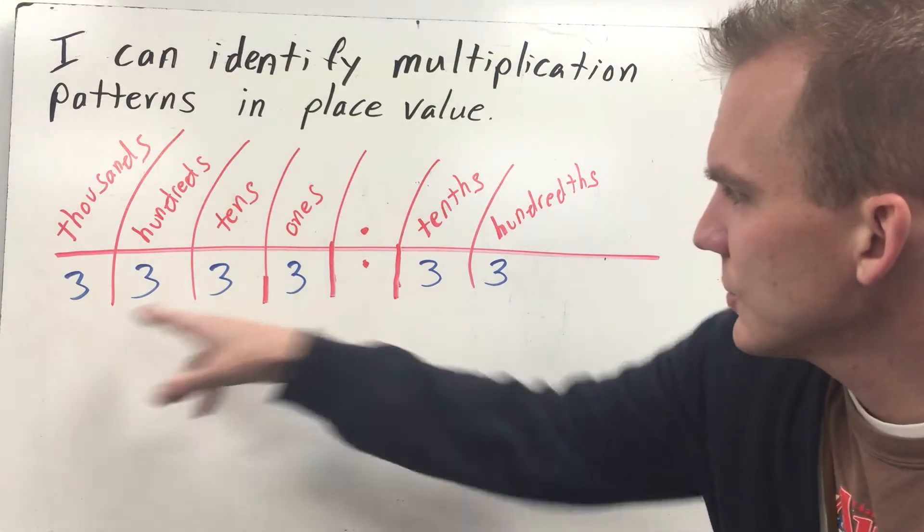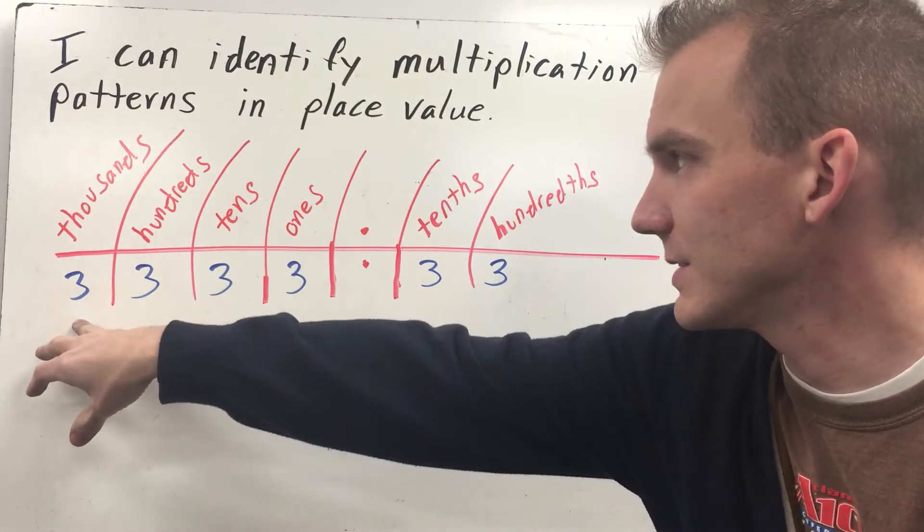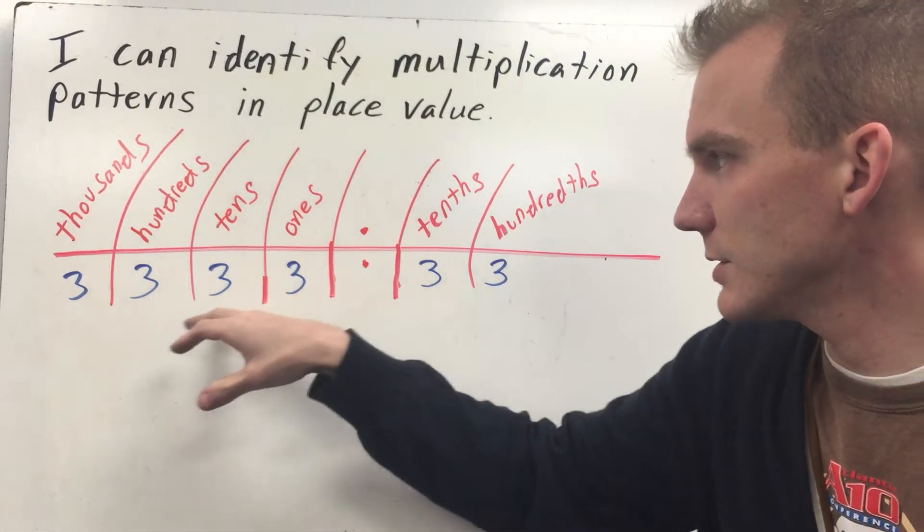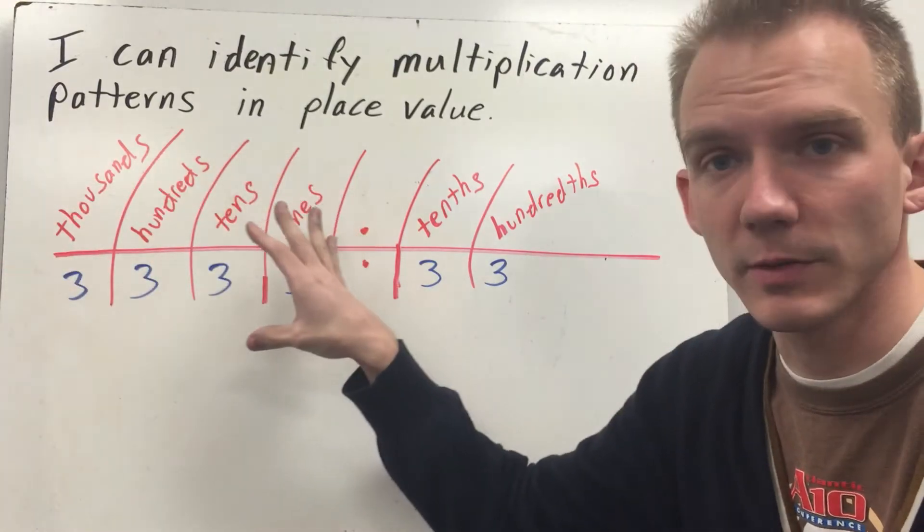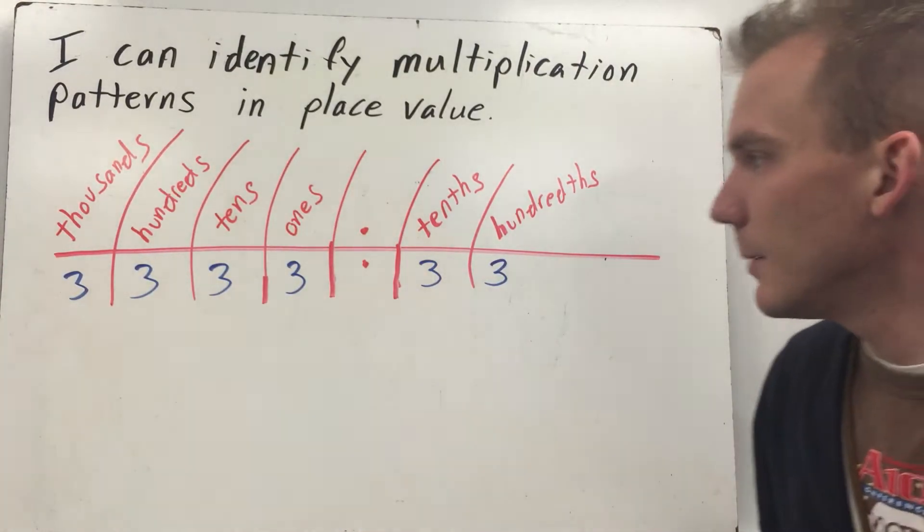So first we want to look at place value. Here's a little place value chart that goes from hundredths all the way up to thousands. You have your ones, your tens, your hundreds, your thousands, some basic place values. And then you also have your decimals, your tenths and your hundredths.